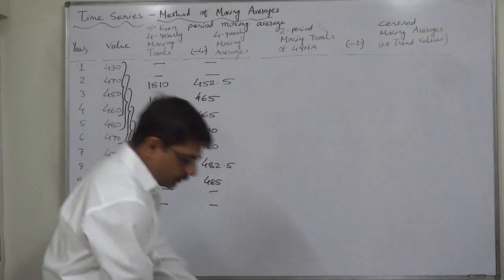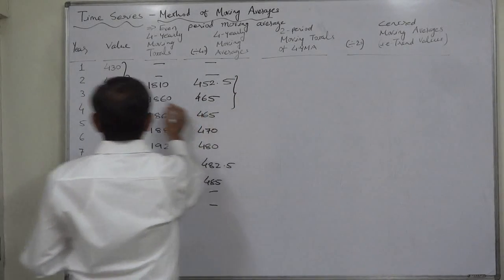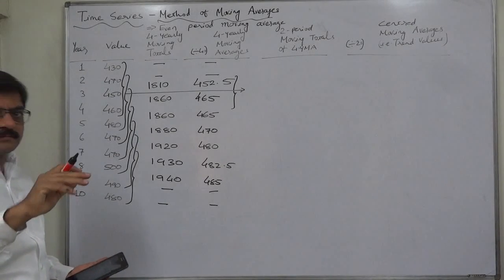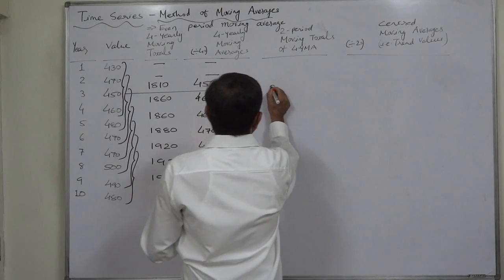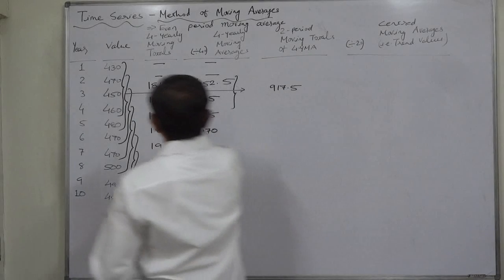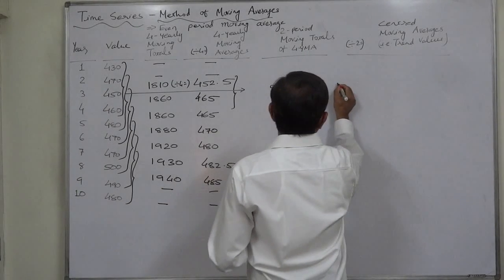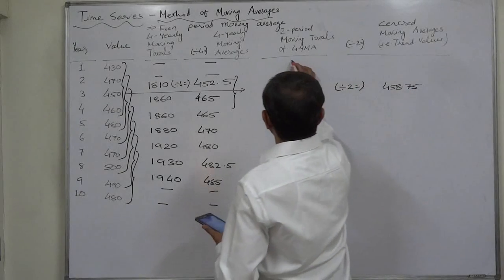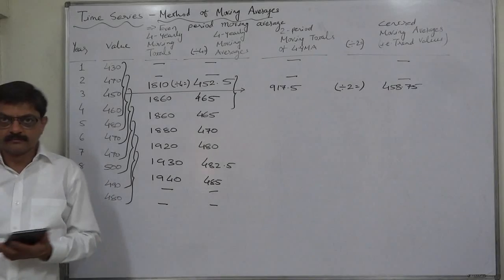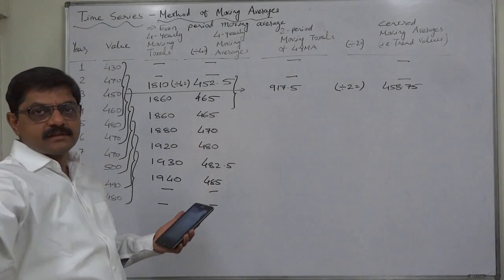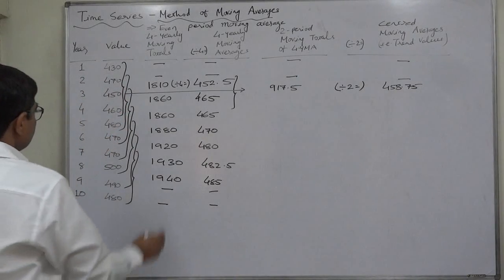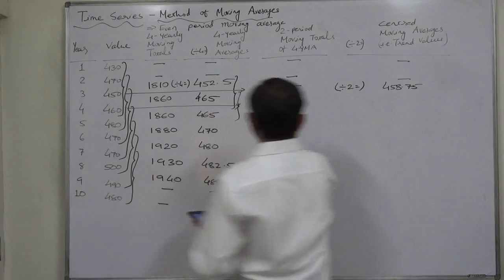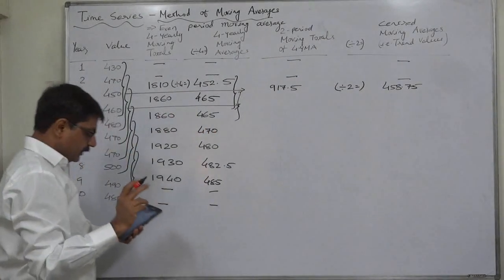If we find the two-period moving totals of all these values, each total will fall against a specific year and that will give us meaningful trend values. So let's find out the two-period moving totals again. The first moving total is 917.5. Dividing by two gives 458.75, which is officially the trend value of the third year. In the alternate lines it will fall against years 4, 5, 6, 7, etc. The next total of the next two values will be against the fourth year.